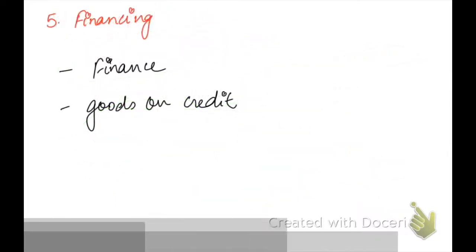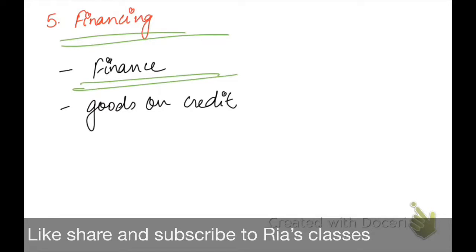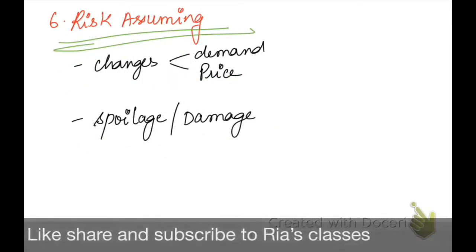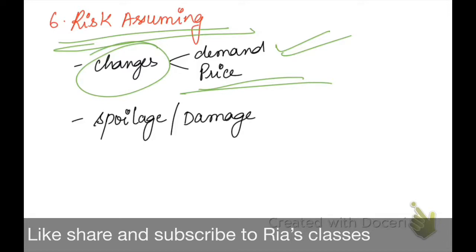The next function that our wholesaler performs is that of financing — providing finance and credit to the retailers. The next function is risk assuming, which is a big function that our wholesalers perform. Different changes in the environment can affect demand; customer needs and preferences change, causing product demand fluctuation, as well as price changes and further demand falls or rises.